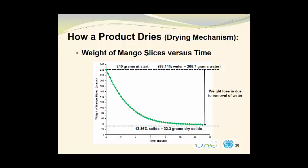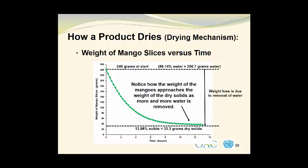The weight change is due to the removal of water, and you should note the characteristic shape of the curve. Notice how the weight of the mangoes approaches the weight of the dry solids as more and more water is removed. You can remove the water by evaporation, but the dry solids will always remain.